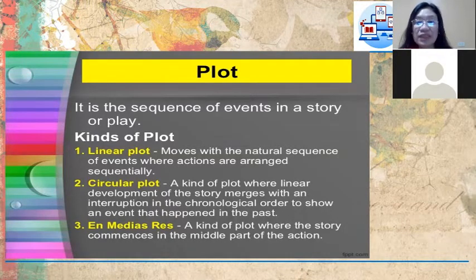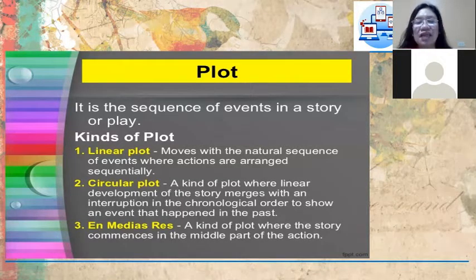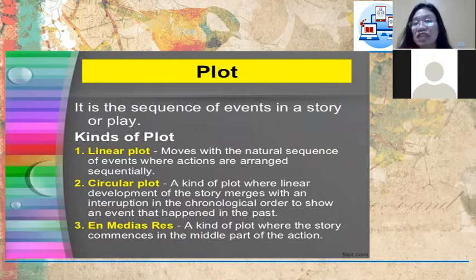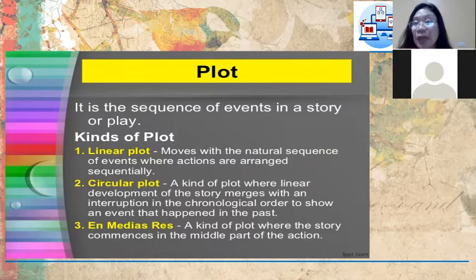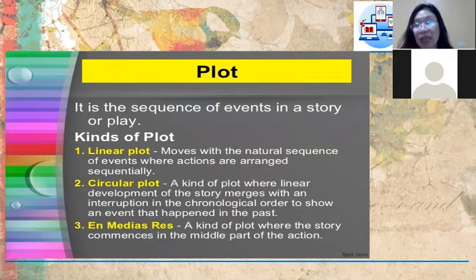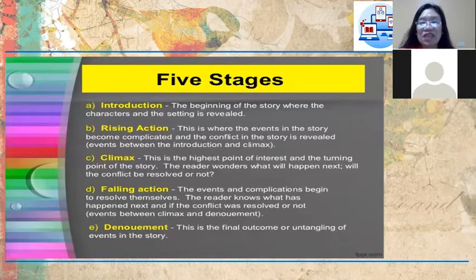The plot is the proper sequencing of events. It can be a linear plot, where actions are arranged sequentially from first to last. It can be a circular plot, where the linear development of the story merges with an interruption in the chronological order to show an event that happened in the past. There is also in medias res, a kind of plot where the story commences or starts in the middle part of the action. There are five stages of a plot.